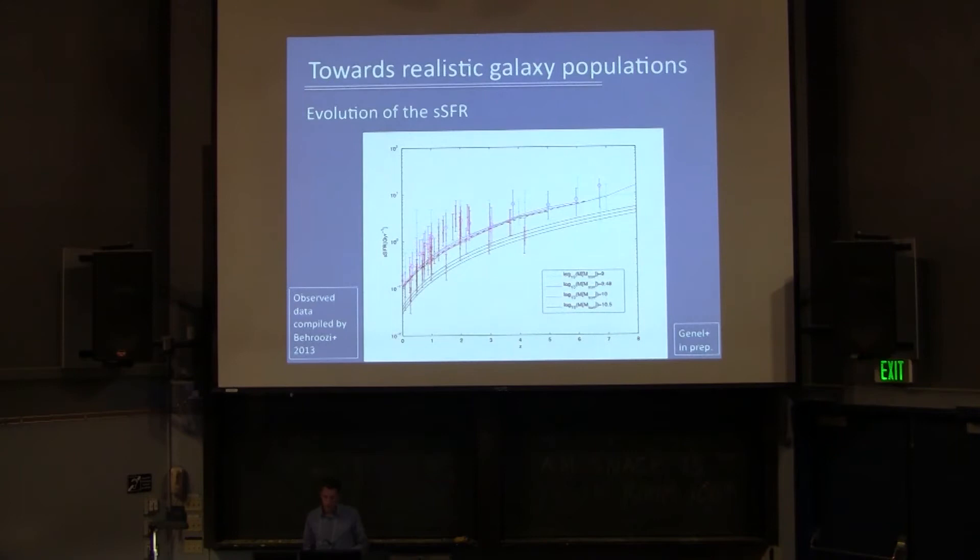Now, an interesting point, or curious, I hope maybe someone can help understand what's going on here, is the evolution of the specific star formation rate. For various masses shown in different colors, this is the specific star formation rate as a function of redshift. All the points here are compiled by Weinmann from observations, and these colored lines are for the different stellar mass bins from our simulation. A few years ago, people thought that there is some plateau above redshift 2. I think it's not necessarily there, and I would say, within the error bars, I think this doesn't look too bad.